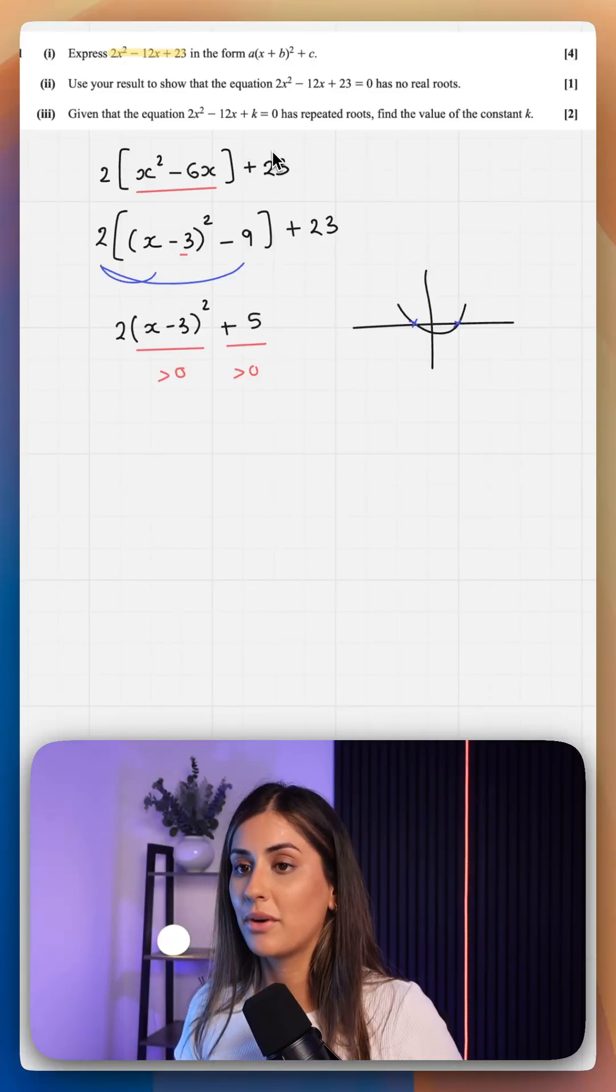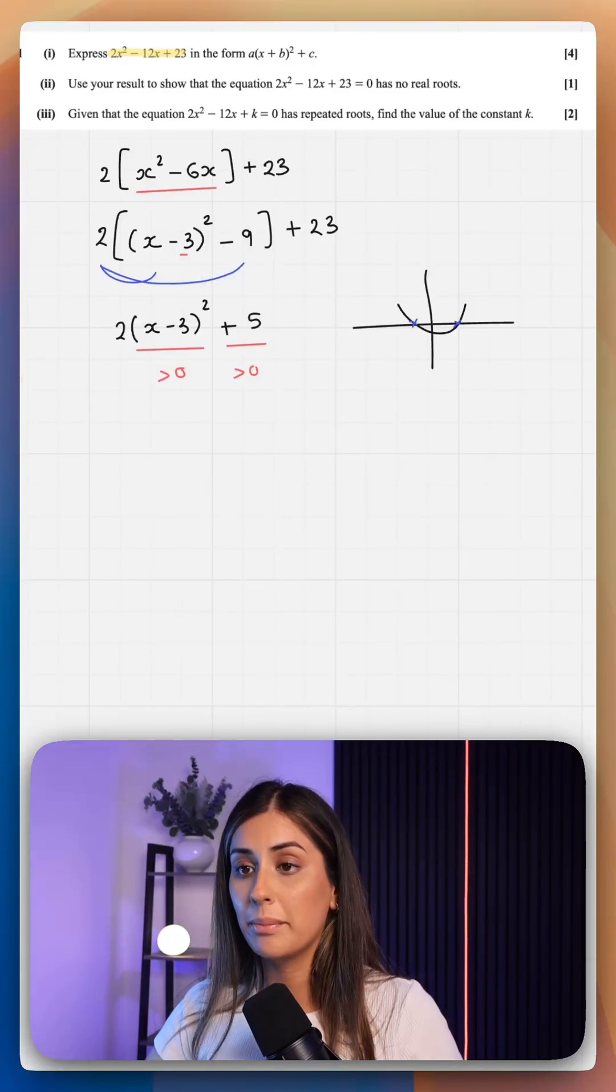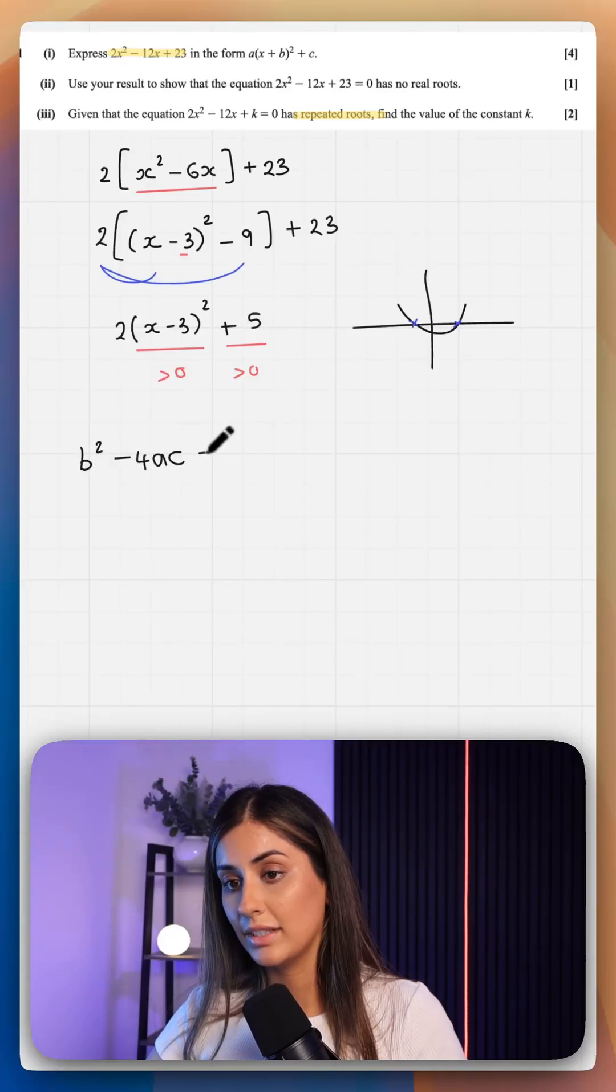And now we're given that 2x squared minus 12x plus k has repeated roots, and if that's the case, your discriminant is equal to 0.